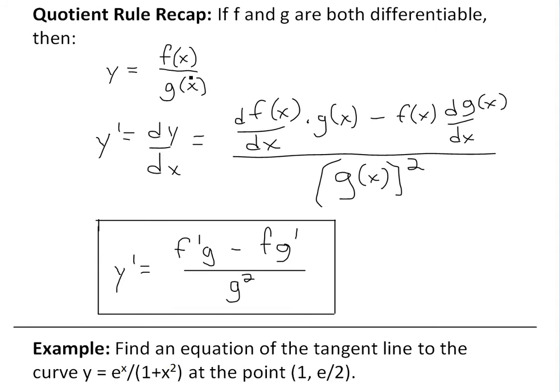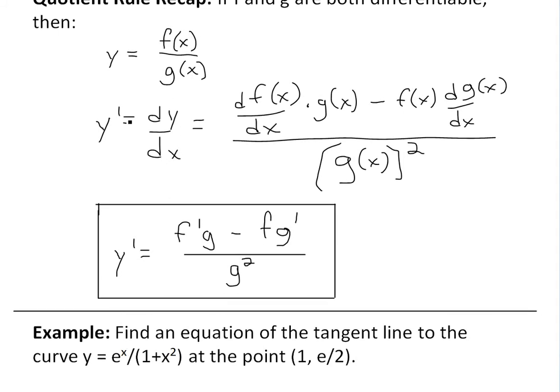Basically, if you have y equals f(x) divided by g(x), or you have a quotient of functions right here, then the derivative is going to be the derivative of f(x) times g(x) minus f(x) times the derivative of g(x), all divided by g(x) squared.